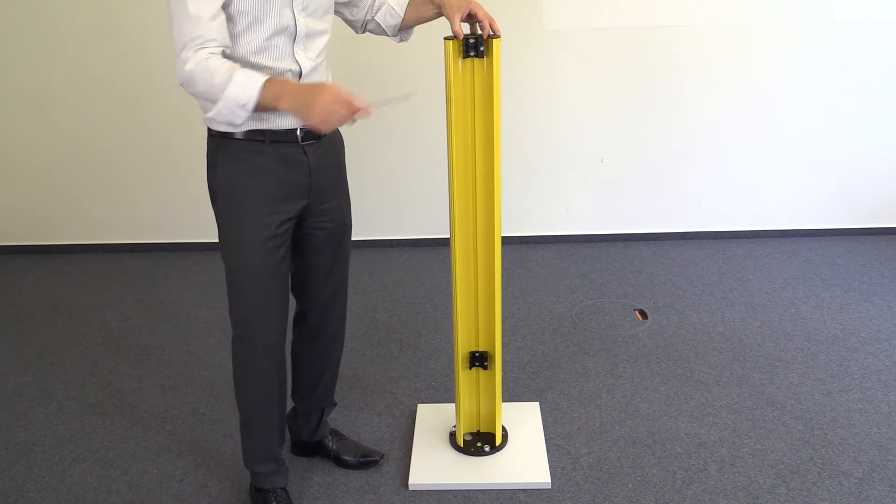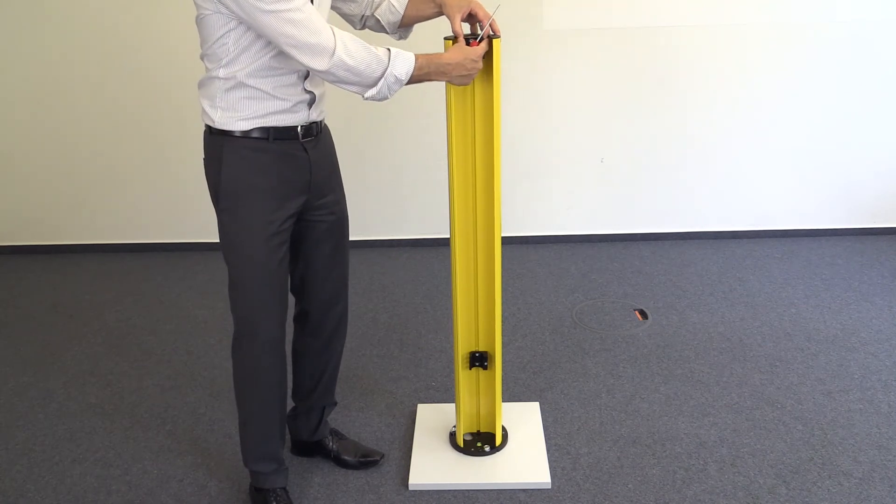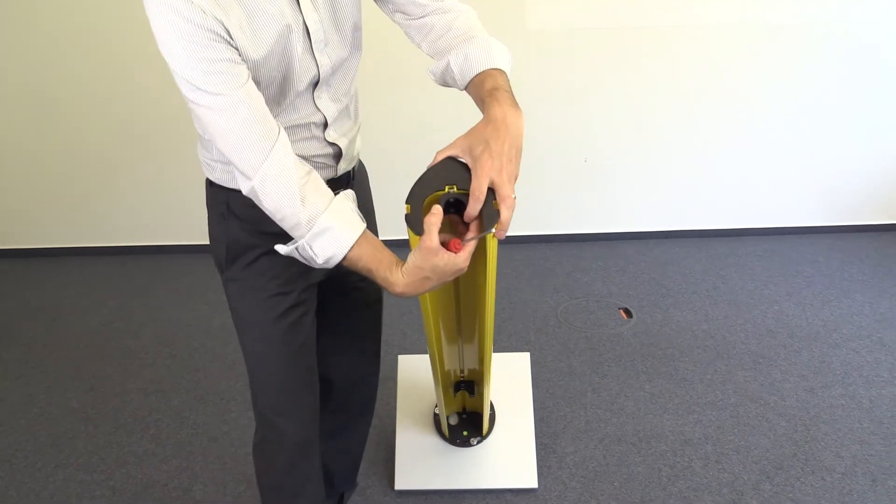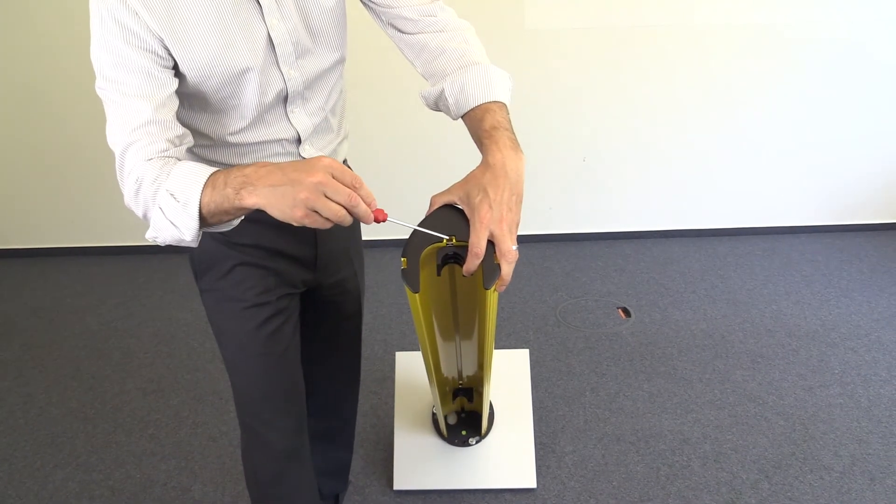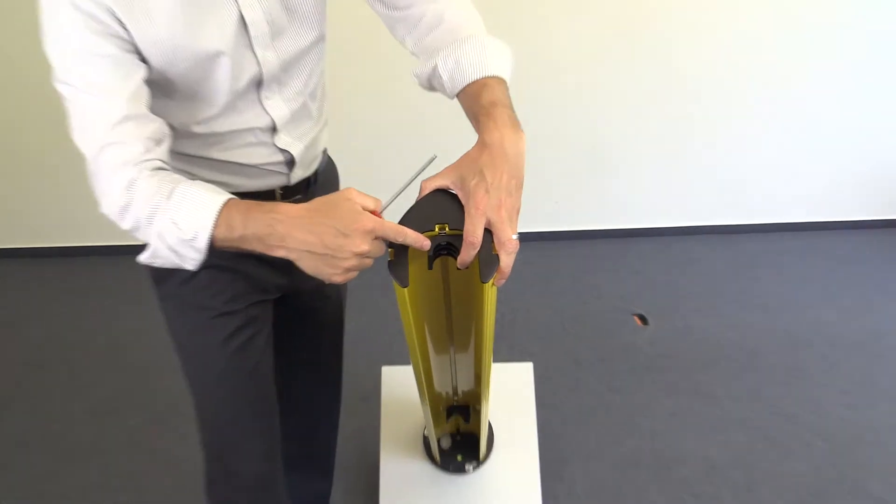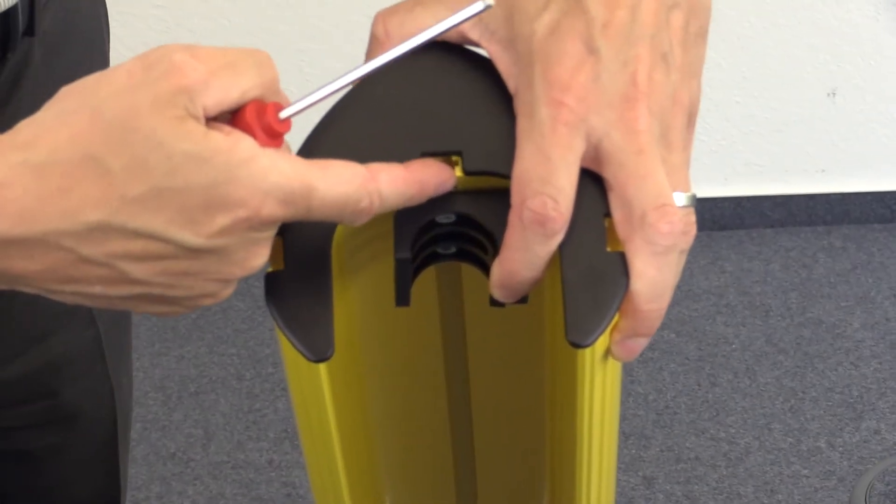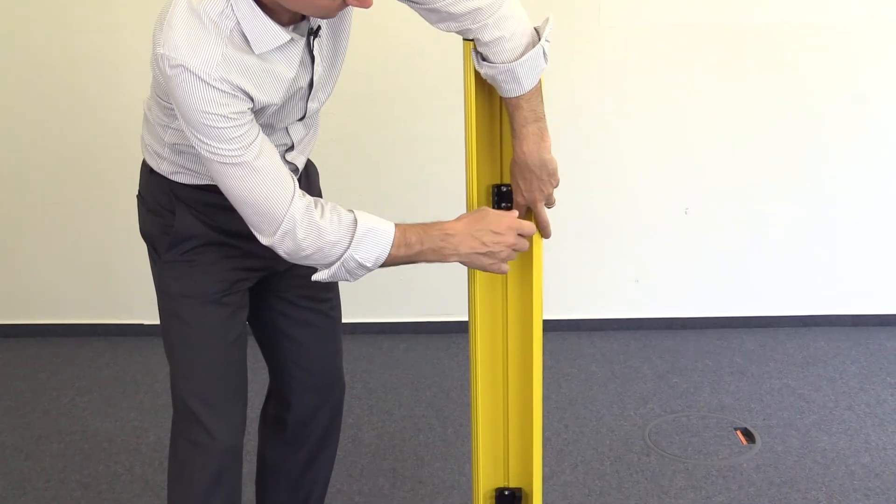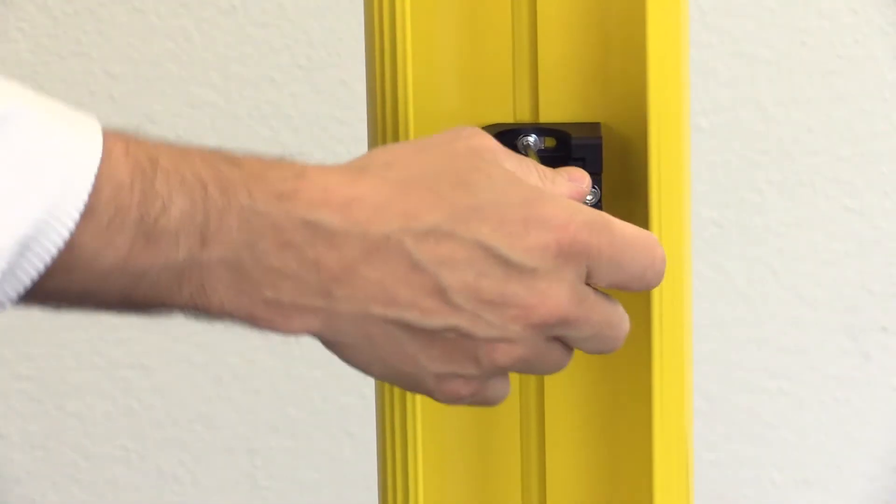Afterwards, of course, we have to mount the second bracket. Here I want to show you that you have to make sure that the washer is placed between the bracket and the column. I bring it down to the desired position, more or less. Align it and fix it.